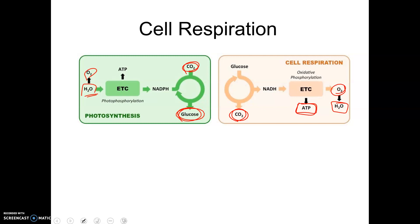In this lecture we're going to talk about cell respiration. In this first slide you see photosynthesis and cell respiration side by side. They are interrelated — the products of one are the reactants of the other. They both involve electron transport chains, they both involve ATP, and glucose, carbon dioxide, water, and oxygen are all involved. But that's the subject of another lecture, so let's just jump right into cell respiration.